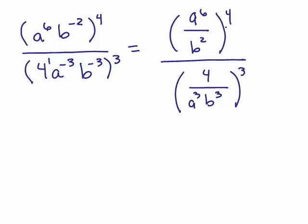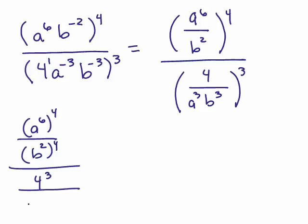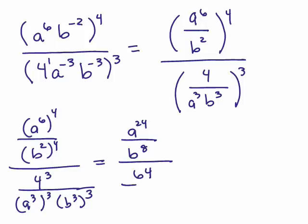But now we could raise each to, you could use the product of a quotient rule. So I have a to the 6th to the 4th power over b squared to the 4th power divided by 4 cubed over a cubed to the 3rd power and b cubed to the 3rd power. So you can see it sort of does get messy here. So we have a to the 24th over b to the 8th over 64 for a to the 9th, b to the 9th. Now you'd have to multiply by the reciprocal.